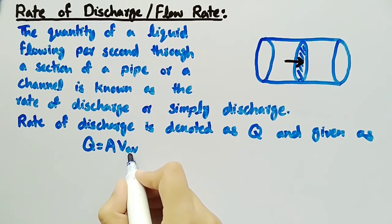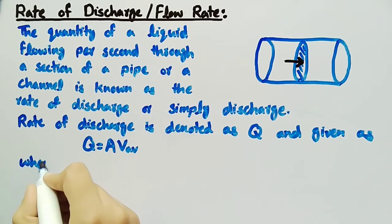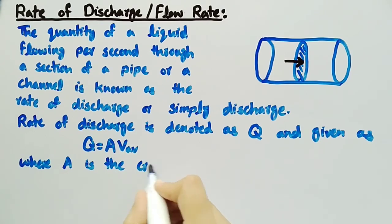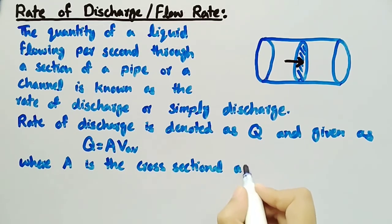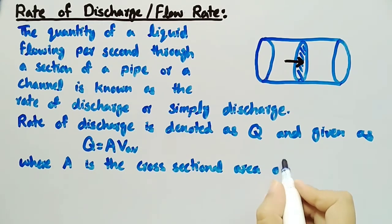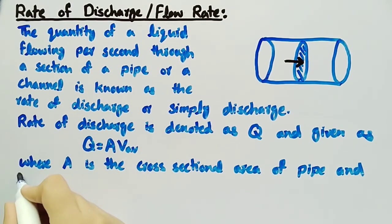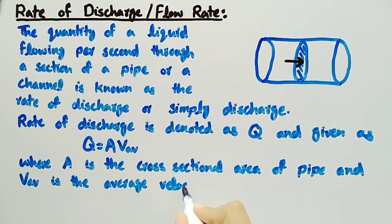Here, A is the cross-sectional area of the pipe and V_av is the average velocity of the liquid.